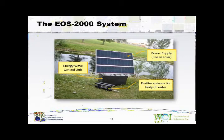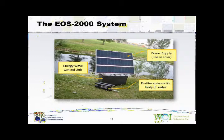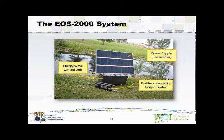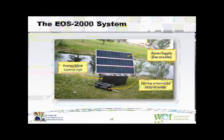Here is a picture of what the EOS system looks like. There are three main components. On top is the power supply — a solar panel, the only power supply needed, with no external cables required. It runs completely on solar energy. Below that is the control box, which contains the circuitry. The box is then connected via a cable to the antenna. The antenna is what floats in the water, while the remaining two parts sit offshore. The antenna emits energy waves in the water that actually increase the oxygen.